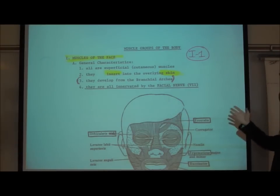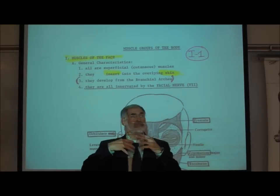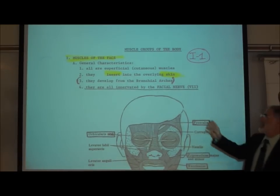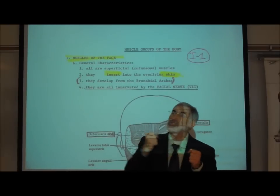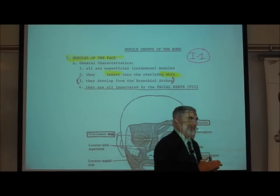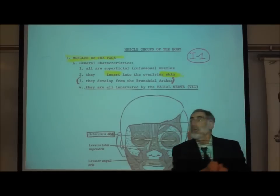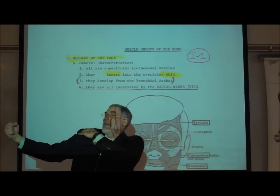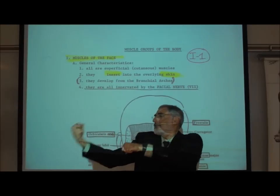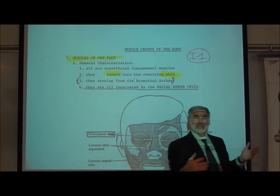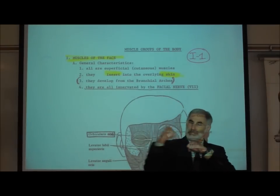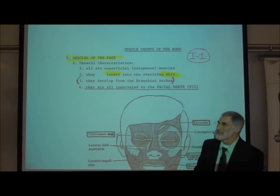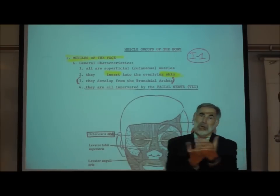Among those are the muscles of the face. The cat doesn't have the range of facial muscles that we as humans have. These facial muscles usually originate on a bone, but they insert or attach onto the skin. What a muscle inserts on is what it pulls. Most muscles originate on a bone, insert on a bone, and pull one bone closer to another. But these facial muscles originate on bones and insert on skin — that means they pull on the skin.